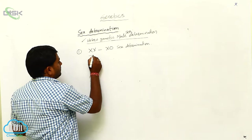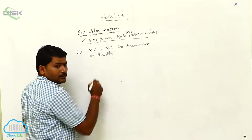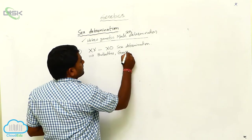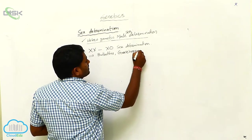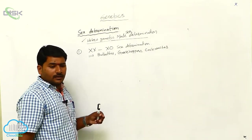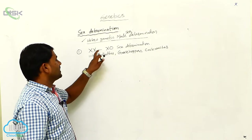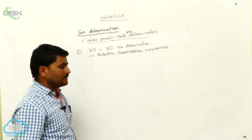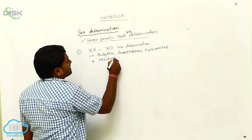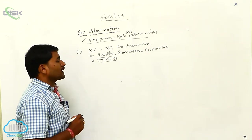This XX/X0 kind of sex determination occurs in butterflies, grasshoppers, and cockroaches. It was identified by the scientist McClung.